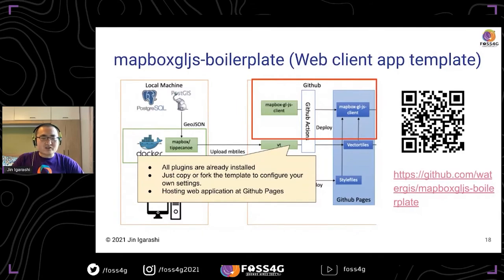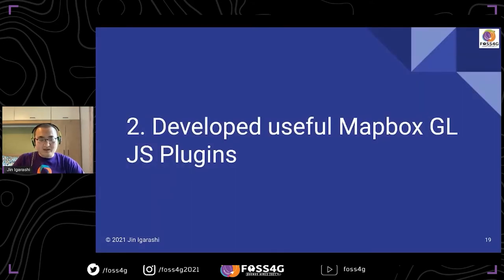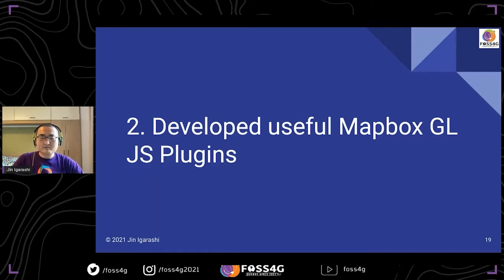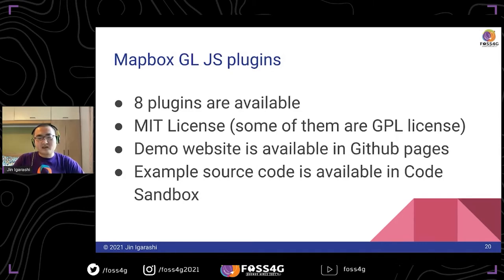For client applications, this boilerplate already has all plugins I developed installed, so you can just copy or fork to use it. The application will be hosted on GitHub Pages. My plugins include eight plugins in total. All plugins are open source licensed, and a demo website is available on GitHub Pages, with CodeSandbox examples also available.